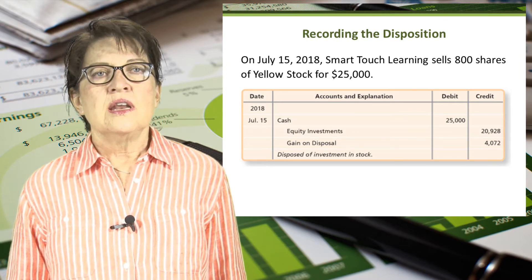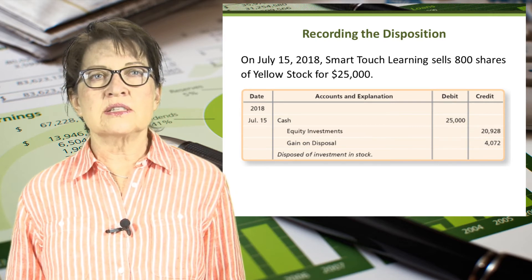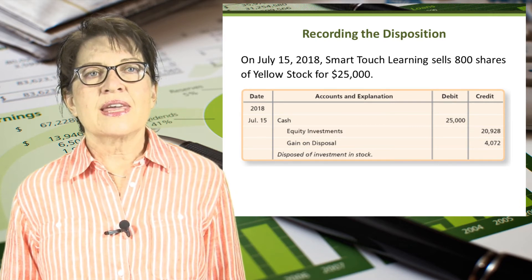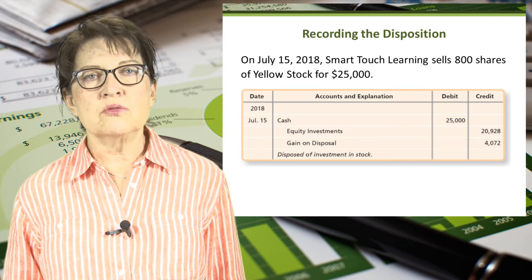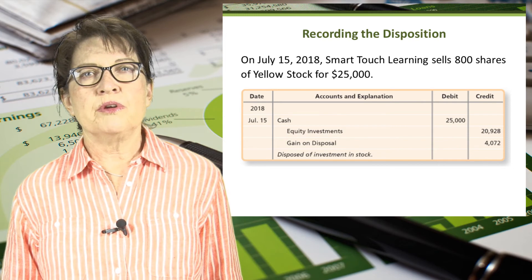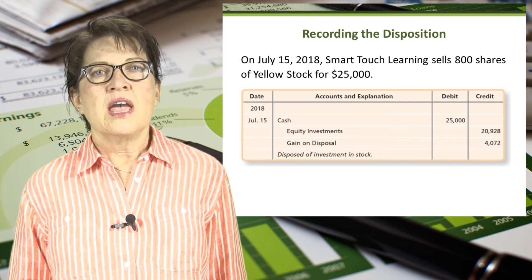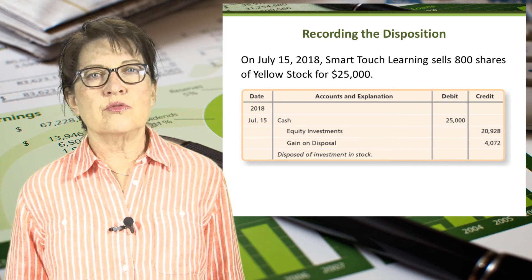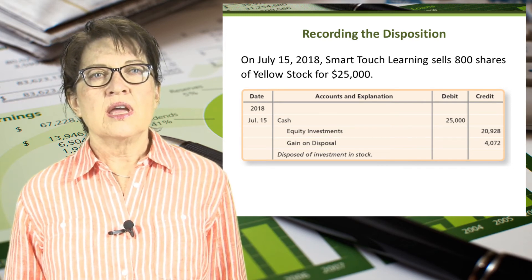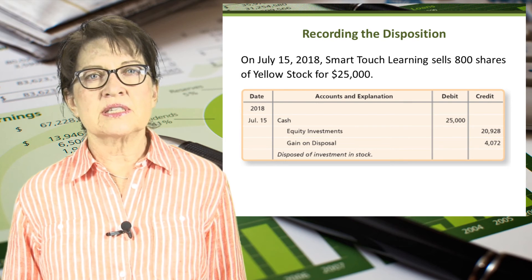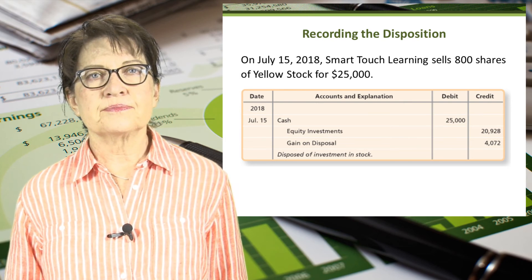Now, if the company had sold the stock at a loss, the account loss on disposal would be recorded as a debit and also reported in the other income and expenses section of the income statement.